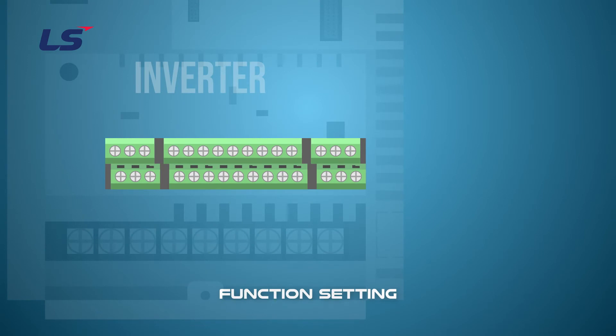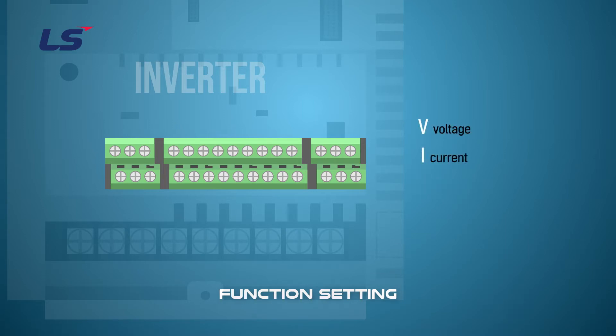Next, let's see how to set the auxiliary speed to 0 to 10 voltage. First, select the type of input signal to be used as auxiliary speed. There are three types of input signals: voltage, current, and pulse.